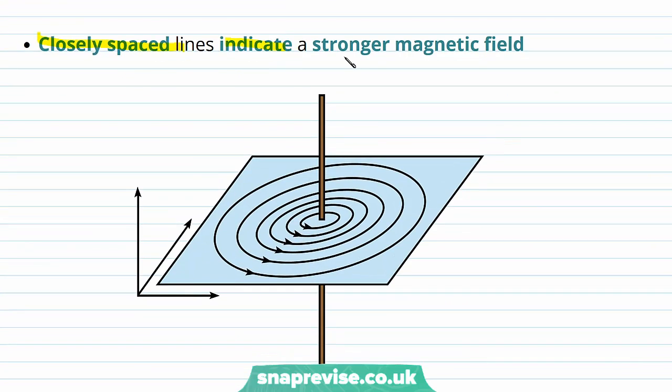Closely spaced lines indicate a stronger magnetic field. And we can see that closer to the wire, we have very dense magnetic field lines. And further away, we have much more sparse magnetic field lines. And this means as we move outwards from the wire, we have a decreasing magnetic field strength.